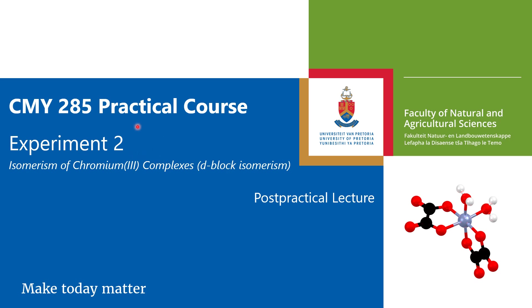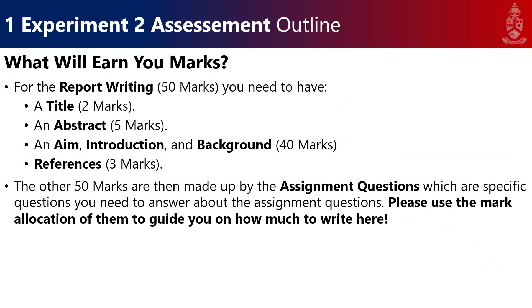Let's look at the aspects that are important for experiment two. The assessment for experiment two entails report writing and assignment questions. The assignment questions count 50 marks, and you need to use the mark allocation to guide how much you write. The other 50 marks are made up of a title, an abstract, an aim, introduction and background, and some references.